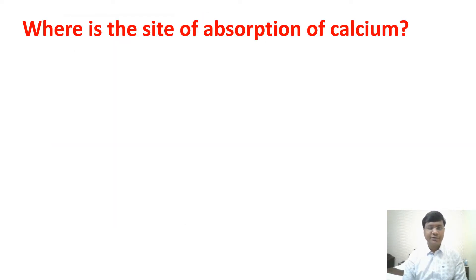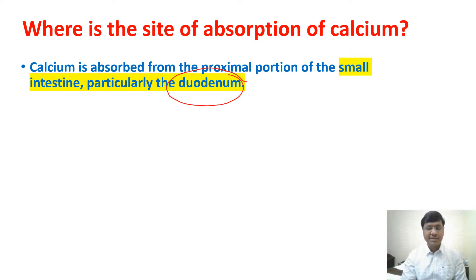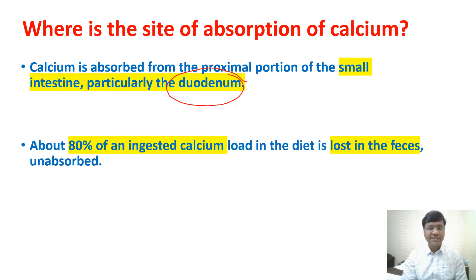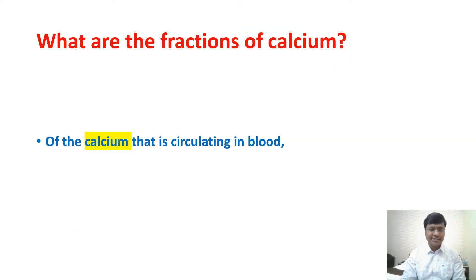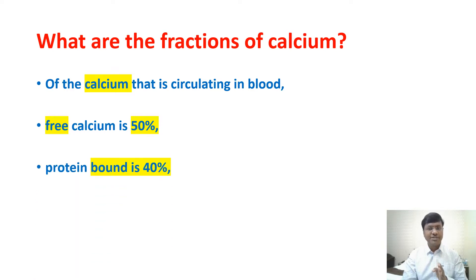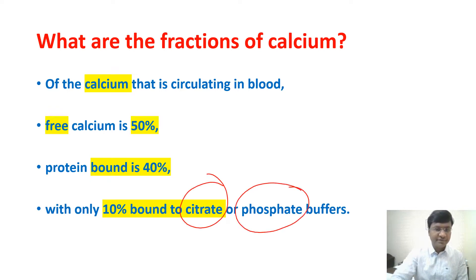The site of calcium absorption in the GI tract is the small intestine, particularly the duodenum, with the help of vitamin D. About 80% of ingested calcium from the diet is lost in the feces unabsorbed. Of the calcium circulating in the blood, free calcium is 50%, protein-bound calcium is 40%, and 10% is bound to citrate or phosphate buffers — three fractions in total.